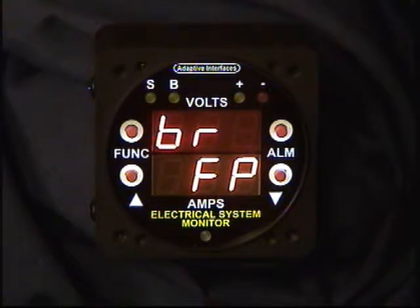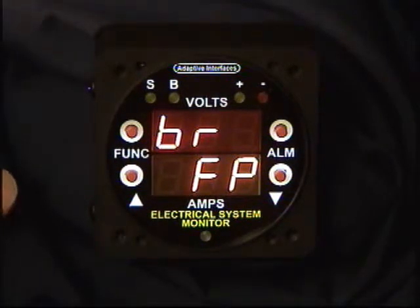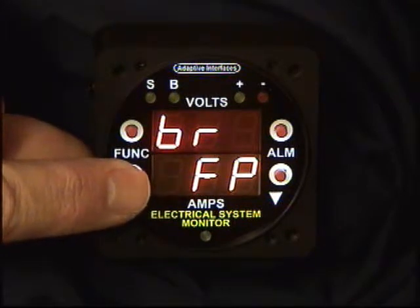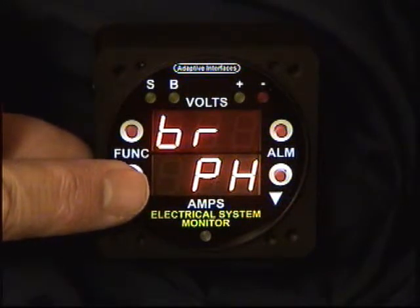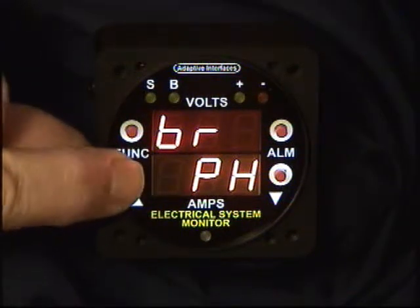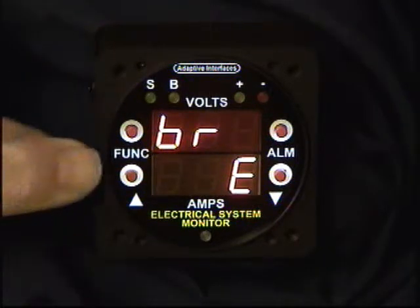Now we are in menu level 1. The functions available in menu level 1 include a brightness function which controls the display brightness of the digits and the LEDs. Right now it's being controlled by the front panel. You have choices of front panel, a photo cell on the front of the instrument, and also an external voltage source — for example, a potentiometer on the instrument panel to adjust display brightness.